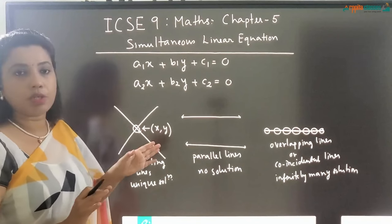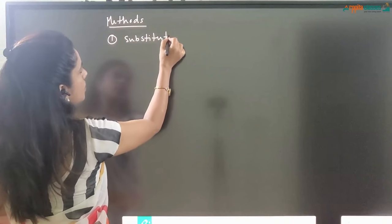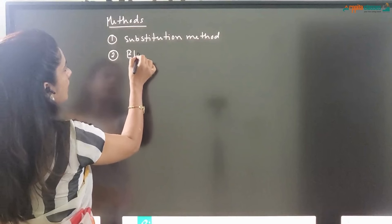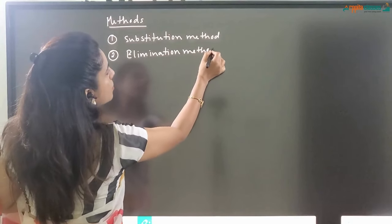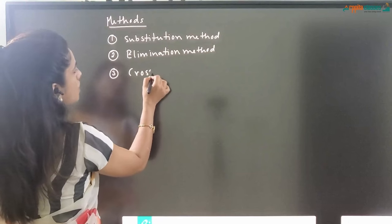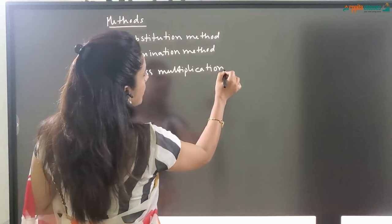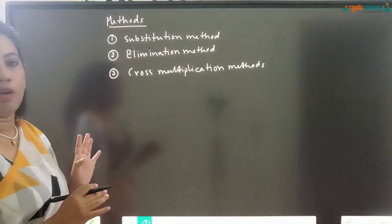Now I am moving on to the solution part — how to solve them. There are three methods to solve them. The first method is called the Substitution Method. The second method is known as the Elimination Method. And the third method is called the Cross Multiplication Method. So we have three methods to solve them. I will teach you all three methods and then we will do the sums from R.S. Aggarwal.